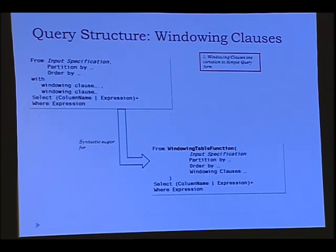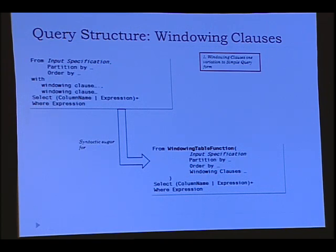The only variation to this simple form is when you specify windowing clauses. In that case, you don't invoke a function — you say 'from an input', specify how to partition and order, and use the 'with' keyword to specify windowing clauses. But this is just syntactic sugar — it's equivalent to calling the special windowing table function.